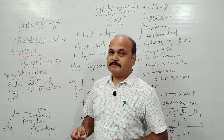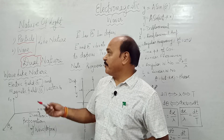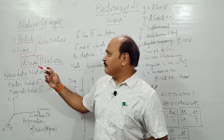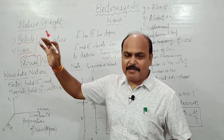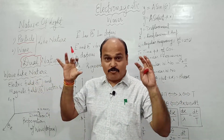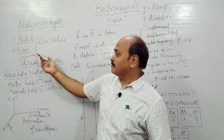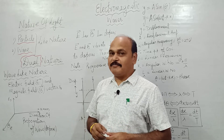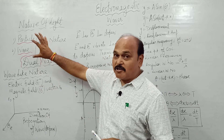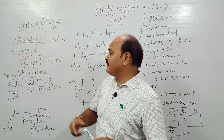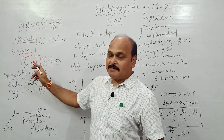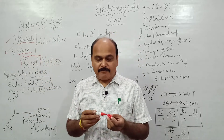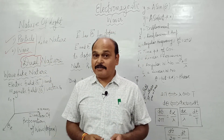Newton's Corpuscular Theory was rejected because it could not explain the refraction of light from a denser to a rarer medium. It was Huygens who proposed the wave nature of light. There was controversy between these two natures — the whole scientific community was divided. One group believed in particle nature, the other in wave nature. But later on, through the stupendous work of de Broglie, a compromise was brought about, and from then onward we believe that light has a dual nature — it behaves both particle-like as well as wave-like.